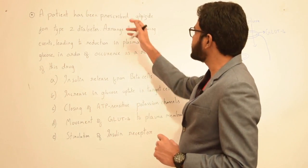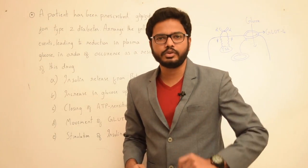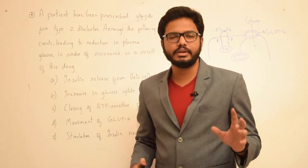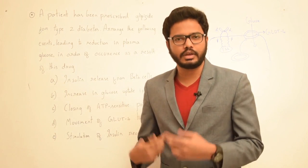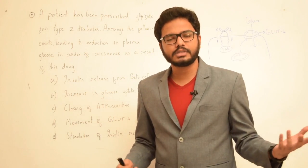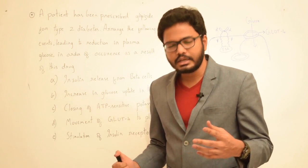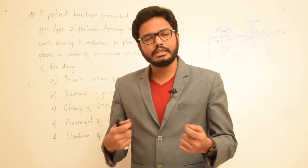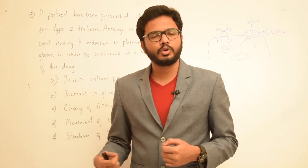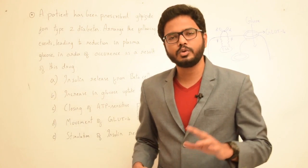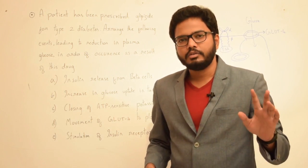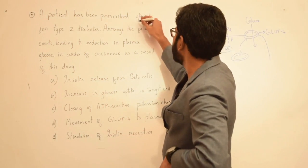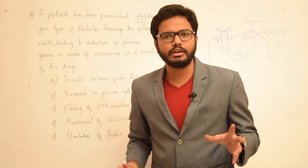Glipizide is a second generation sulfonylurea. Before going into the arrangement of these options, let's briefly discuss the mechanism of action of sulfonylureas as well as insulin, because ultimately these sulfonylureas stimulate or promote release of insulin from the pancreatic beta cells, thereby helping in lowering blood glucose levels.